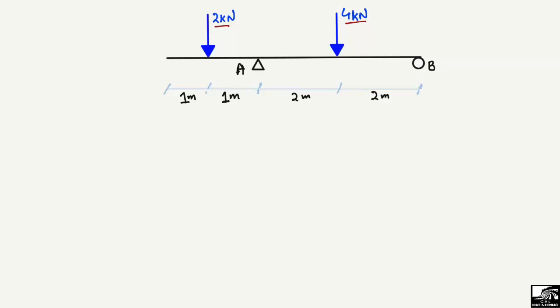There are two support reactions, one at A and one at B. We have to first find the support reactions. Let's consider the support reactions RA and RB acting upward in order to support the load. To find these support reactions we use the equilibrium equation — the sum of moments at any point equal to zero. Let's consider the moment at point A equal to zero, and assume clockwise moment is positive.